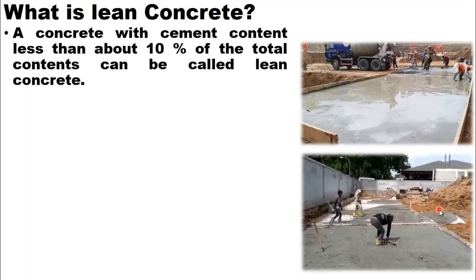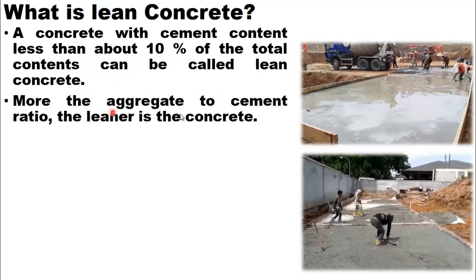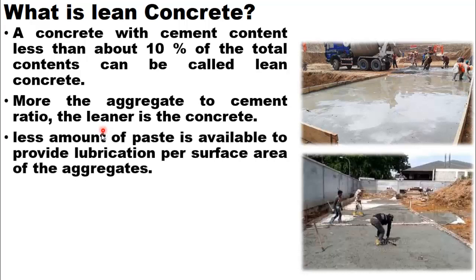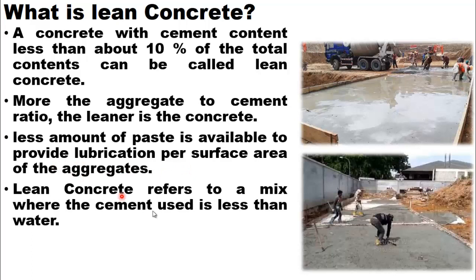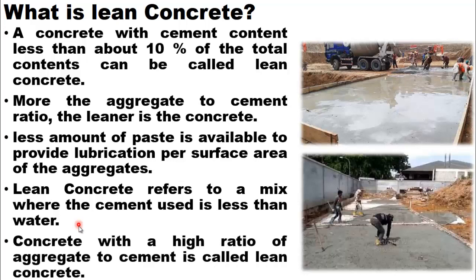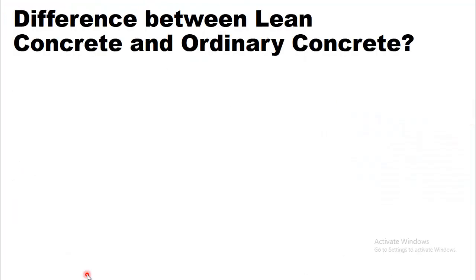First of all, what is lean concrete? A concrete with cement content less than about 10% of the total contents can be called lean concrete. The more the aggregate-to-cement ratio, the leaner the concrete. This means that other aggregates — fine aggregate and coarse aggregate — are in greater quantity compared to cement. Less amount of paste is available to provide lubrication per surface area of the aggregates. Lean concrete refers to a mix where the cement used is less, and a high ratio of aggregate to cement is characteristic of lean concrete.